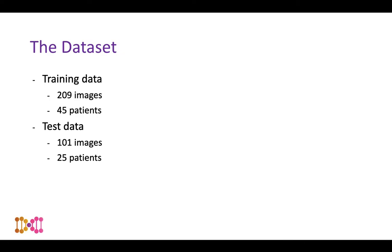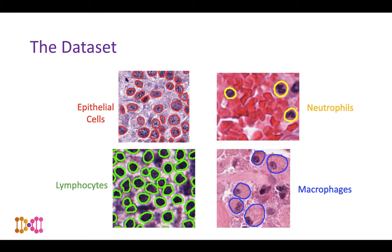The data was split into train and test sets, where training had 209 images from 45 patients and test had 101 images from 25 patients. In the example cropped image regions, epithelial cells show evident texture but significant variation in appearance from organ to organ. Neutrophils show a multi-lobed appearance, lymphocytes are relatively homogeneous with quite dark pixel intensity, and macrophages have nuclei with surrounding cytoplasm that can often appear quite granular.